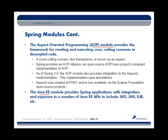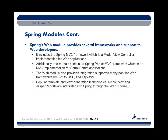The Java Enterprise module gives us the capability to integrate things like Java Messaging Service, JMX, and EJBs into our Spring applications, in a way that abstracts away a lot of the fine details of those Java Enterprise APIs. The Spring Web module provides several pieces for building MVC-style web applications, and also offers integration with popular MVC packages like Struts, JSF, and Tapestry.